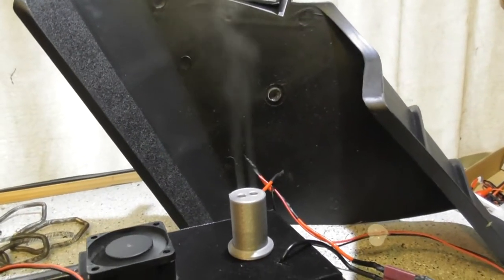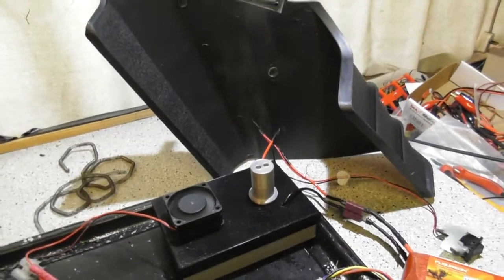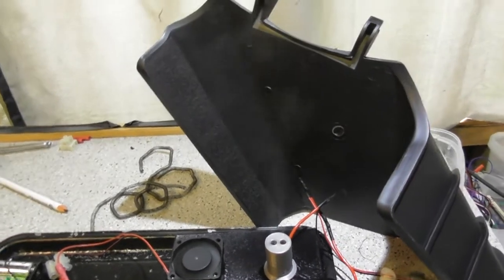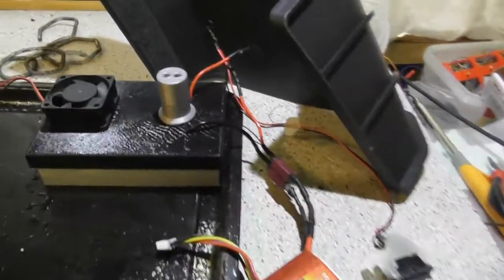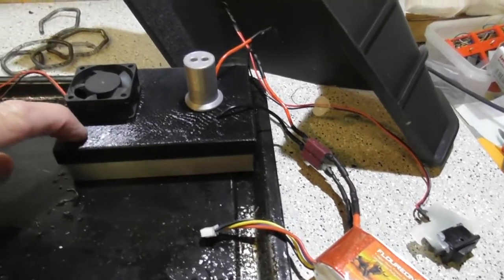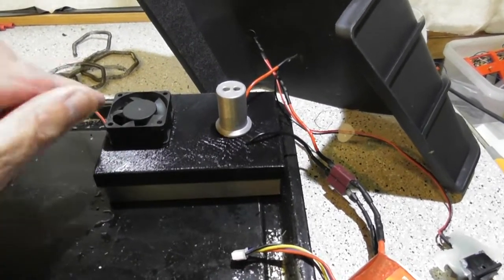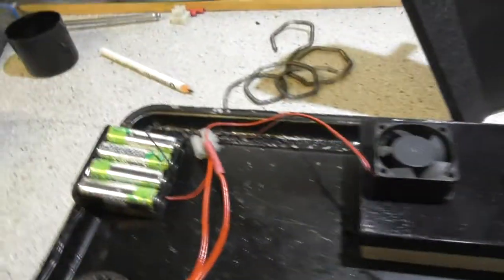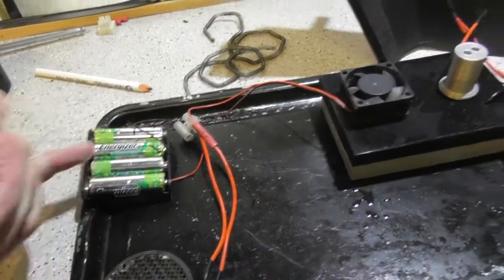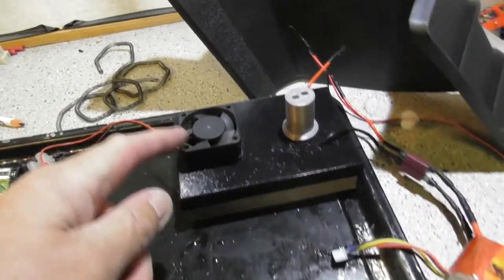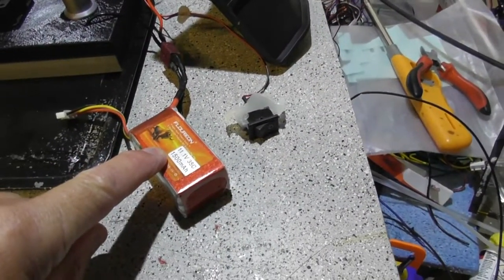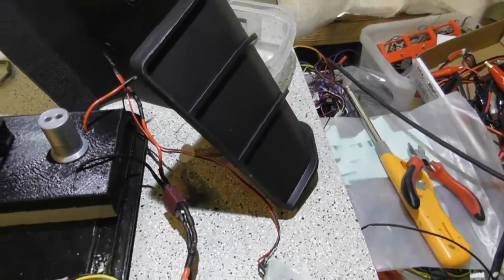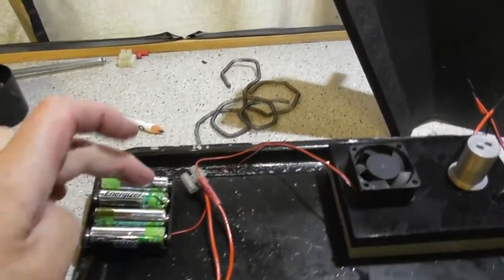She's working, I'll just run through the components. There's a 3D printed box here containing the fluid and the element, a 3D printed chimney, 6-volt battery pack, 12-volt fan, 11.1-volt battery, a switch and connectors, and a little bit of soldering.